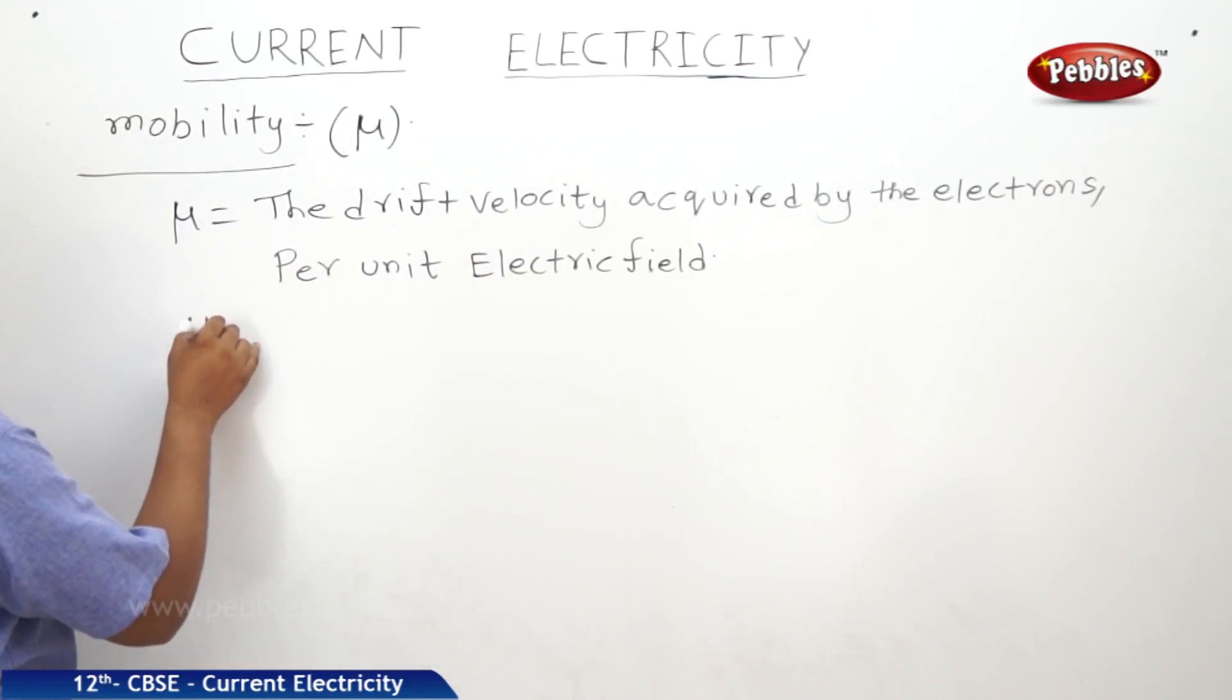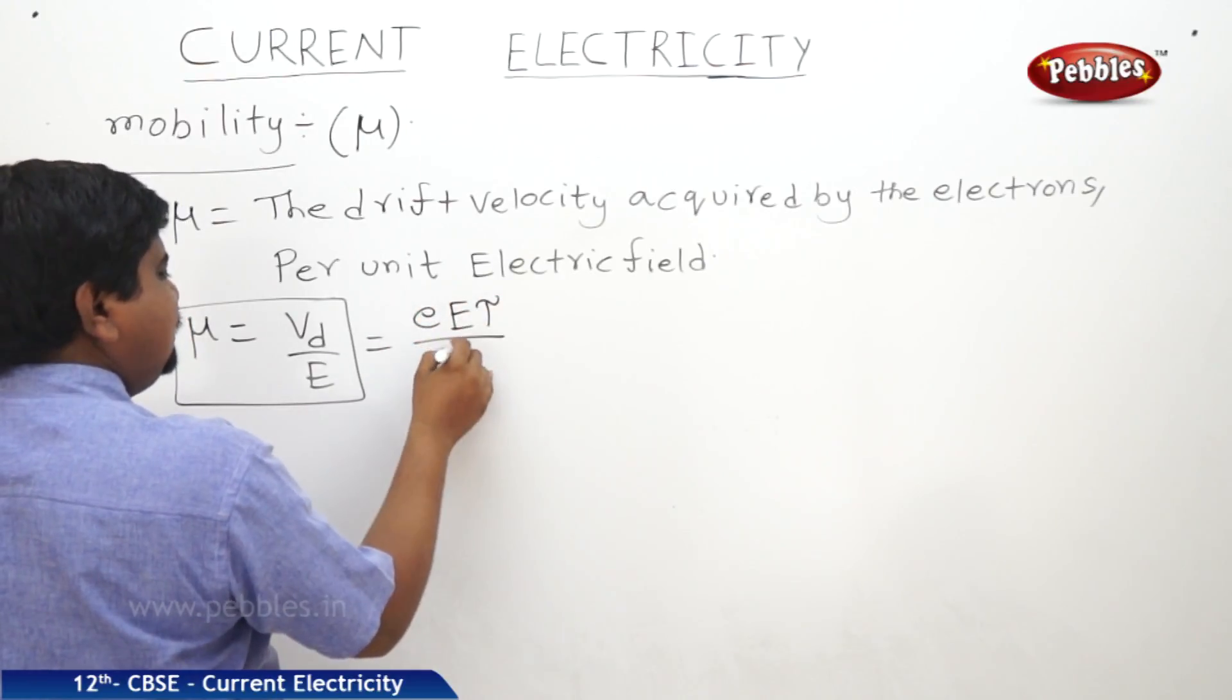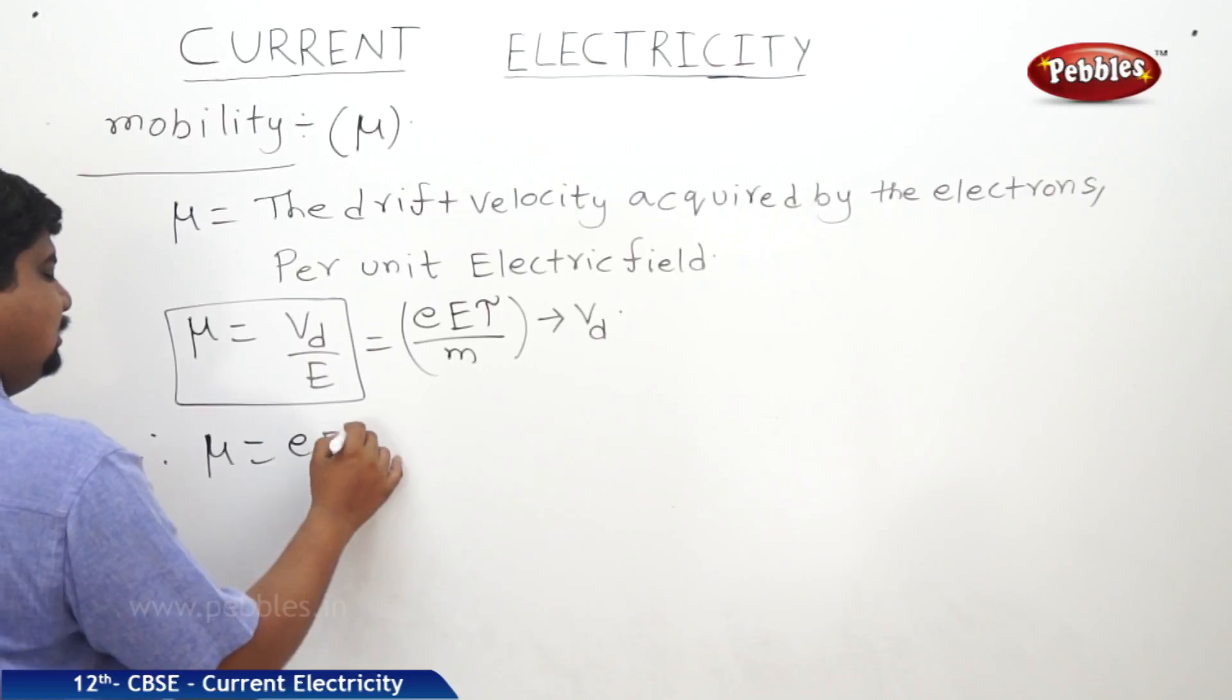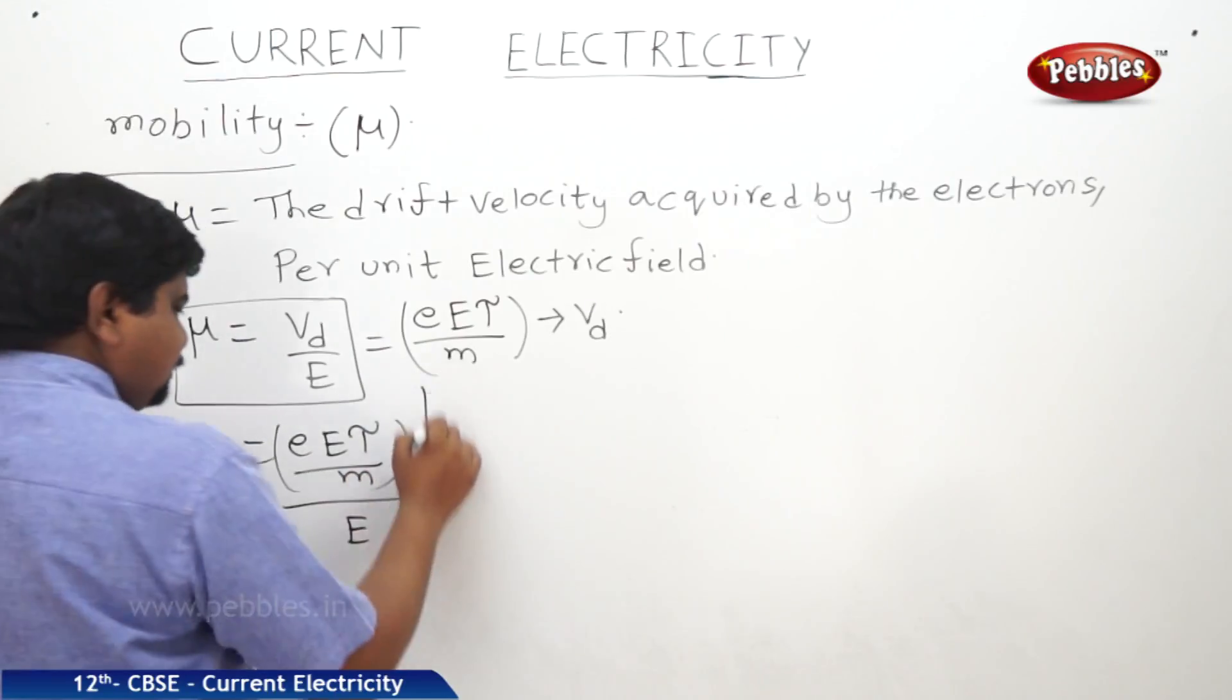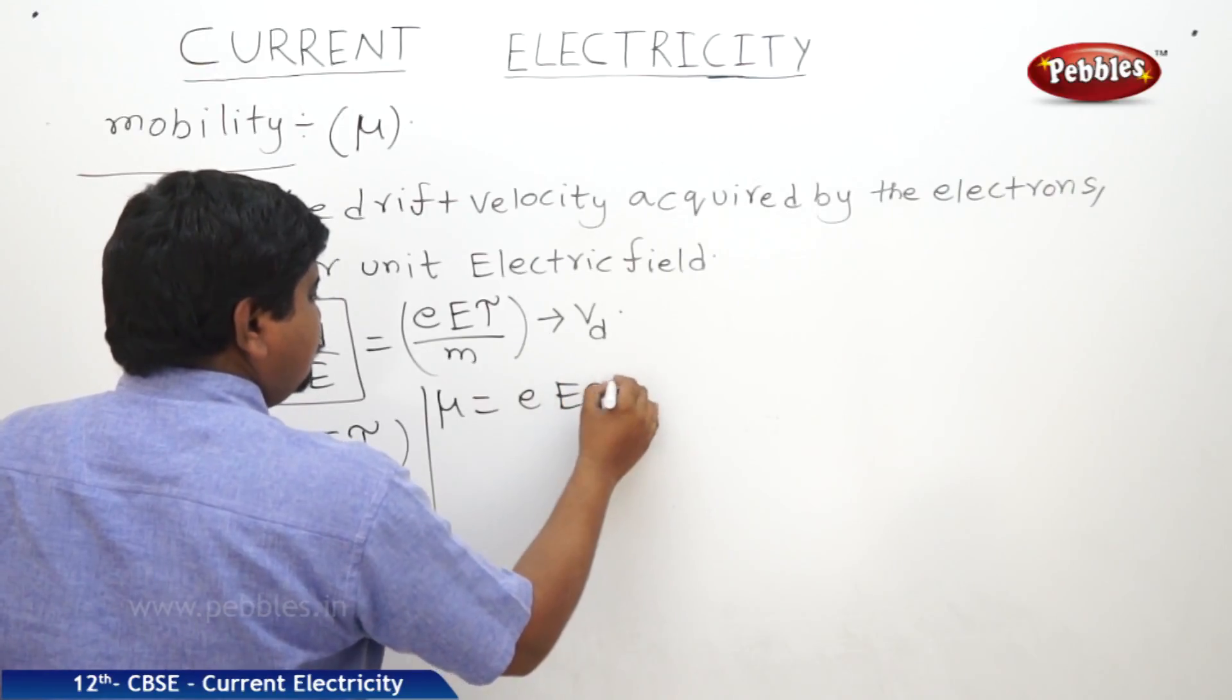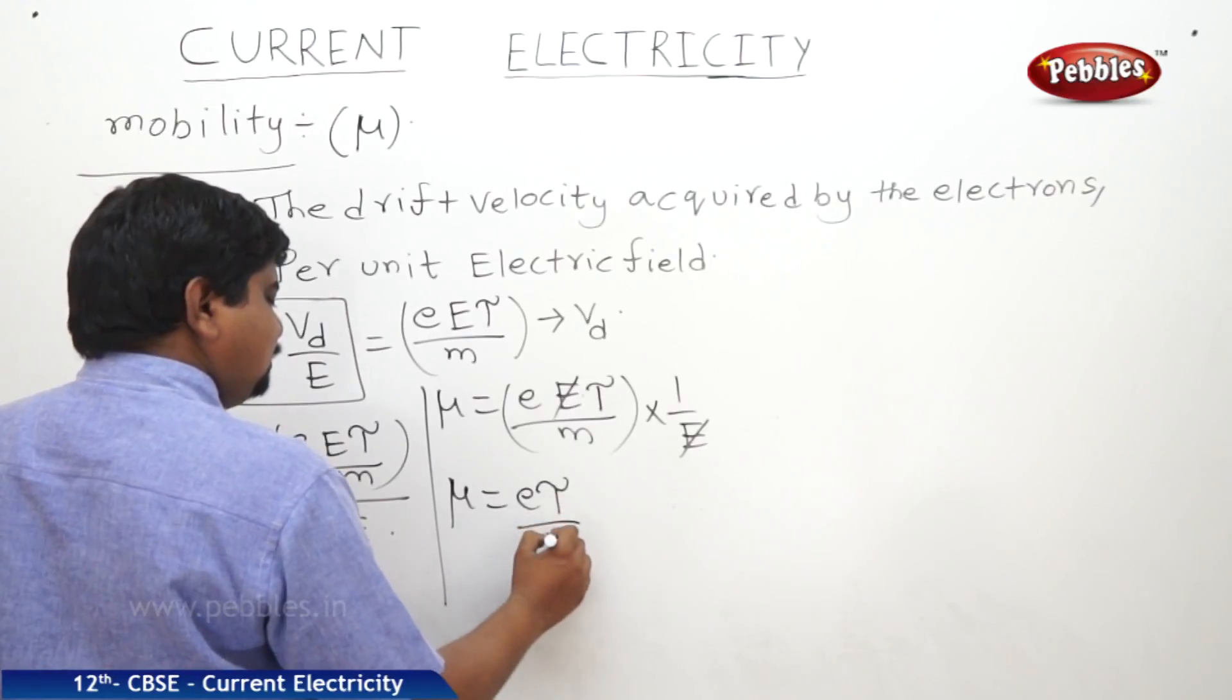So, we can write mu is equal to vd by E. We know that vd is equal to eE tau by m. Therefore, mu is equal to eE tau by m whole divided by E. Therefore, mu is equal to eE tau by m. This 1 by E goes up, it will become 1 by E. E and E get cancelled. Therefore, mu is equal to e tau by m.